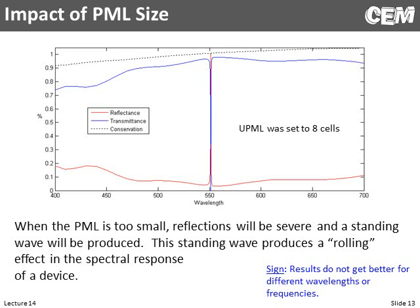PML size. Let's say our PML was not big enough. This is something that's not going to get better with increasing or decreasing wavelength or frequency. But we see a rolling behavior — that's due to standing waves. If we have a PML that's too small, it's reflecting and forming a standing wave, and as we change frequency or wavelength that standing wave moves, giving us rolling behavior in our response. Notice conservation is not 100%; it just keeps going up. So our answer is not getting better with wavelength, meaning it's not a grid resolution problem — in this case it's a PML problem.